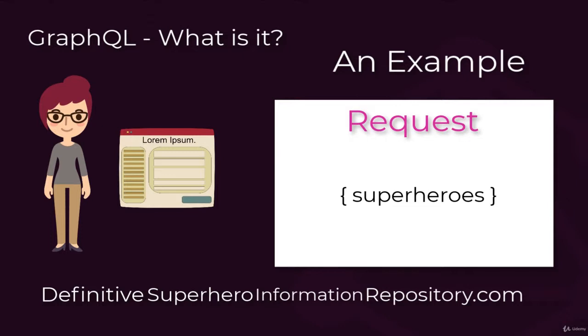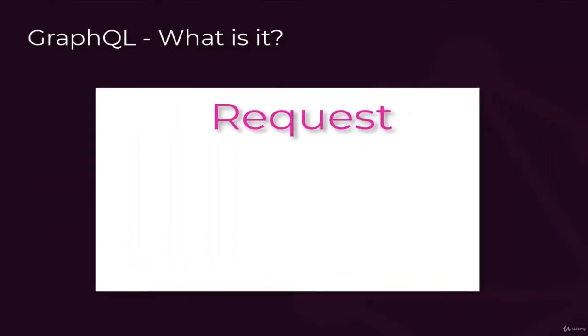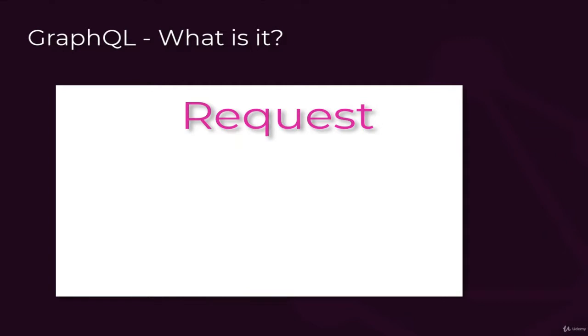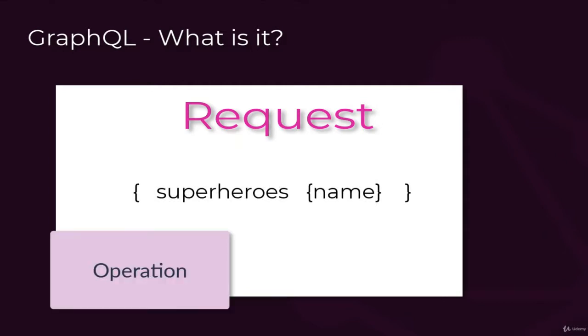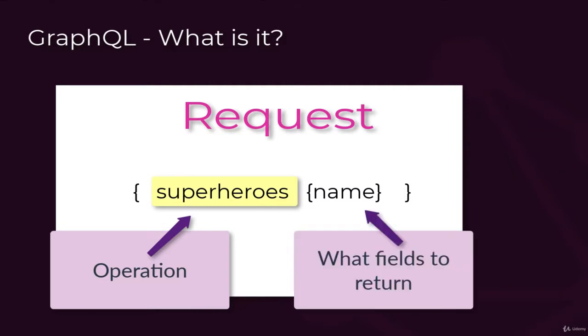For example, let's say we want the name returned. So our complete, albeit simple, GraphQL request message could look something like this. So, a GraphQL request will consist of at least two parts.